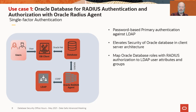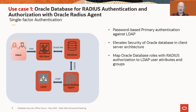A database client does not actually send passwords to the database in most cases. Instead, it sends a hashed representation of the password to the database. That way, if someone were able to intercept it in communications, they can't read the password because it's hashed — it's a one-way thing that can't be reversed.